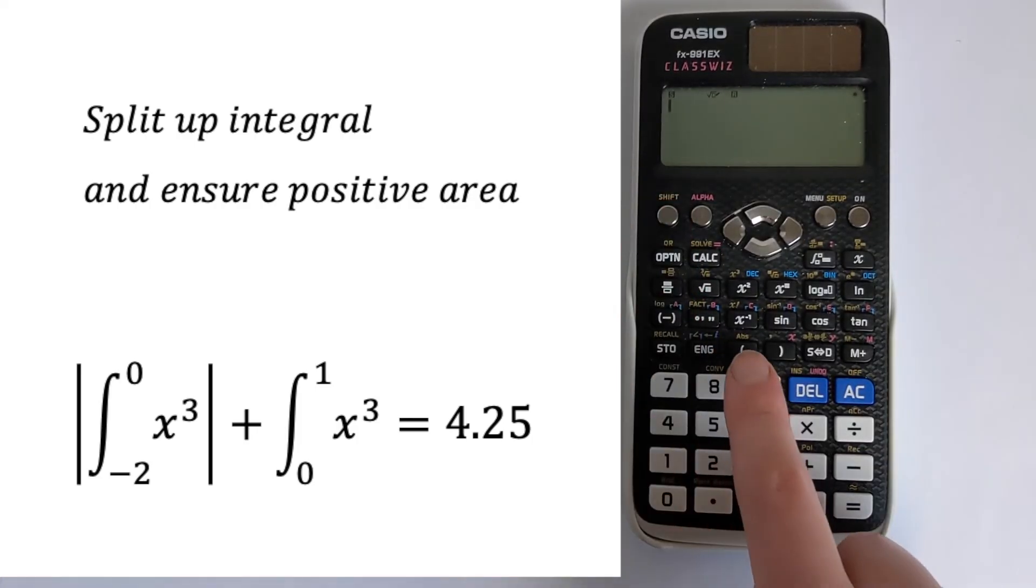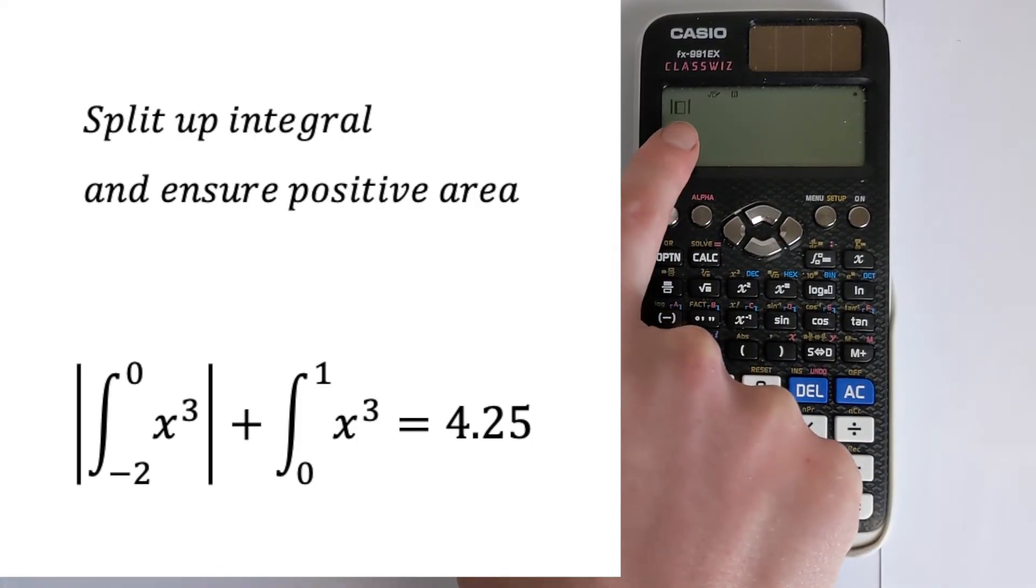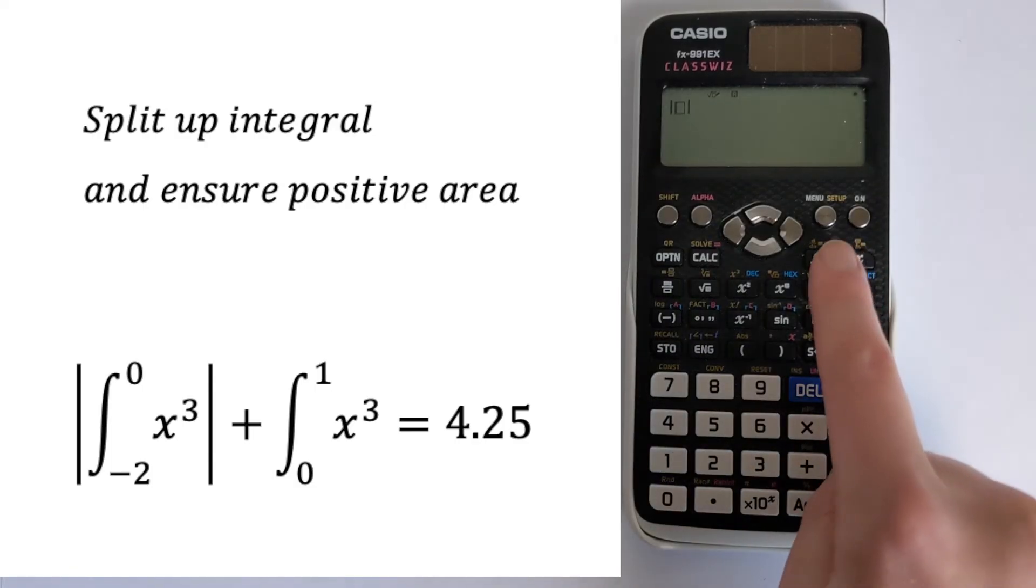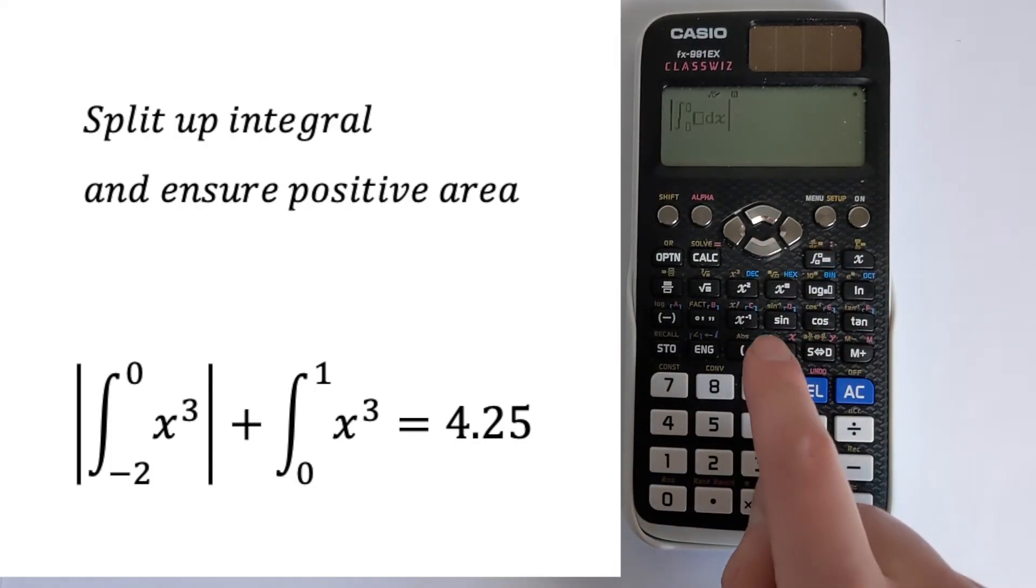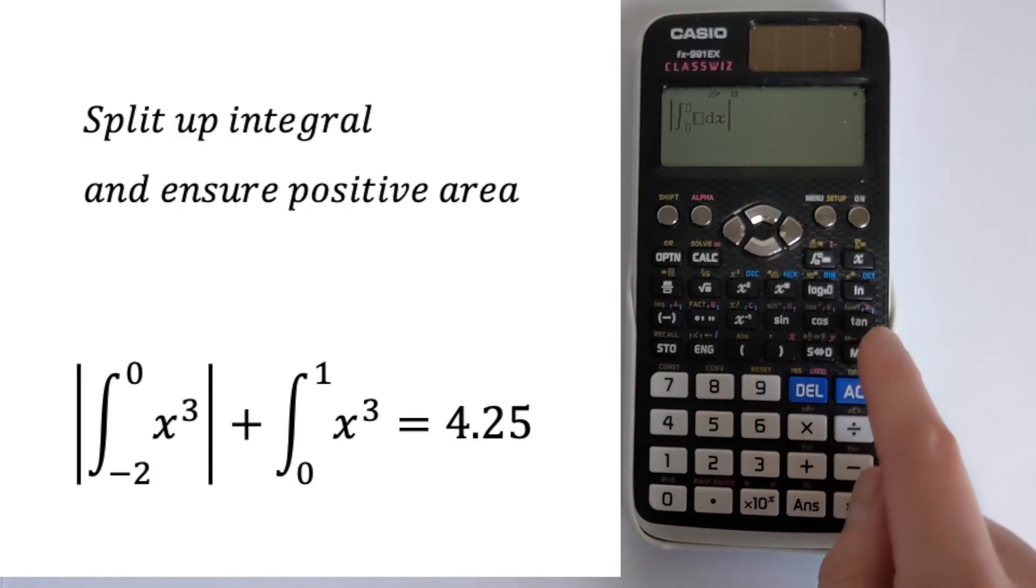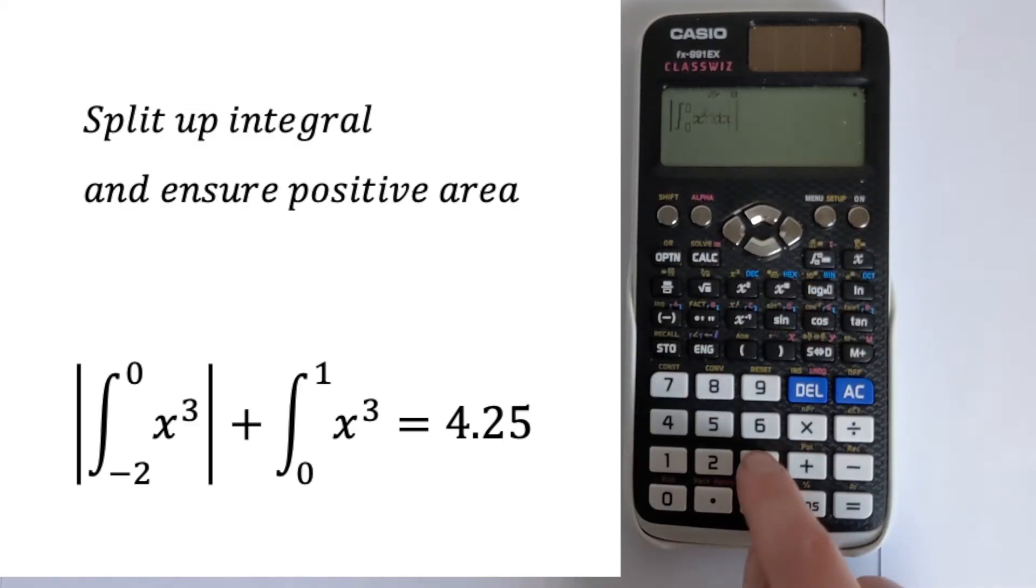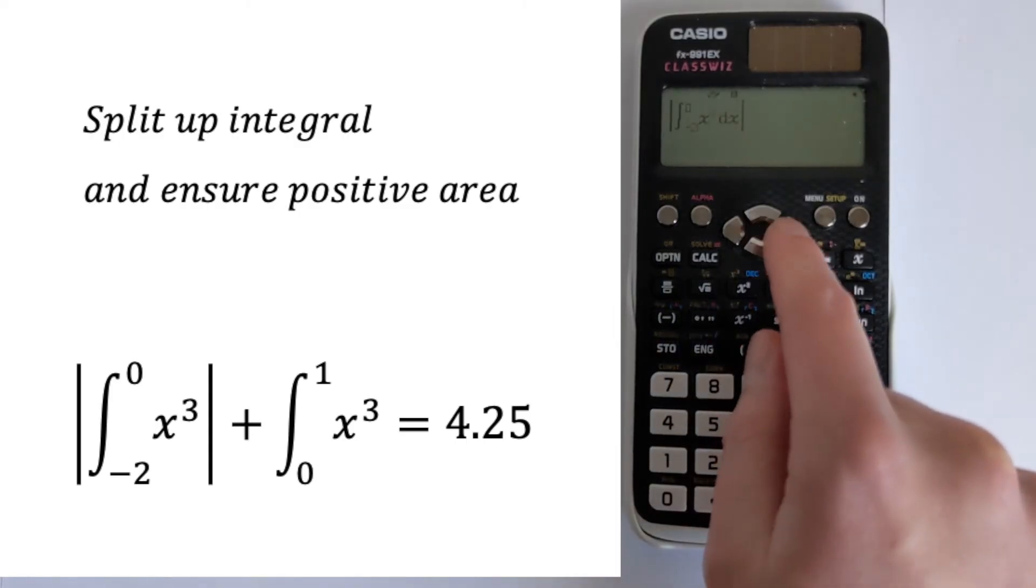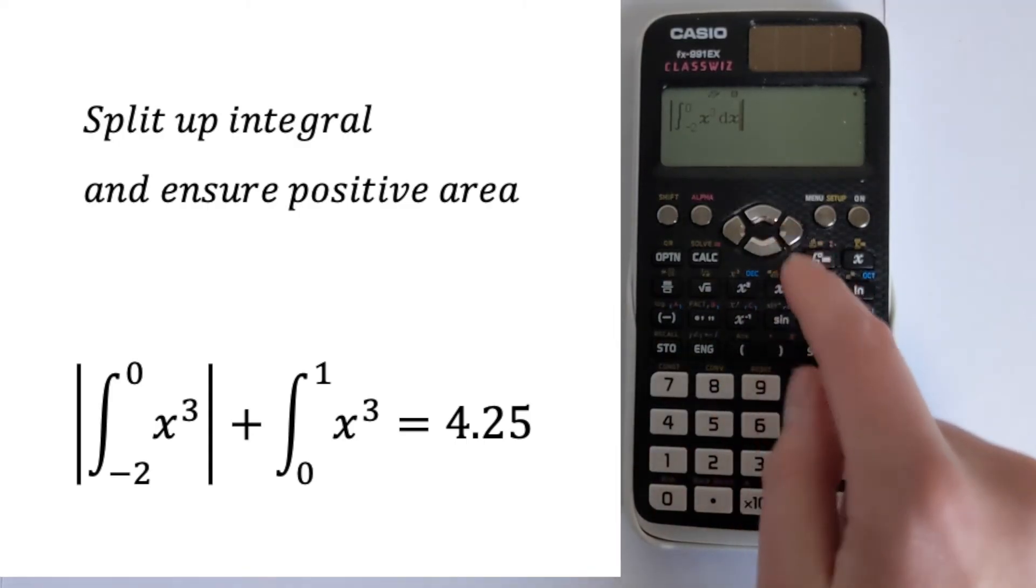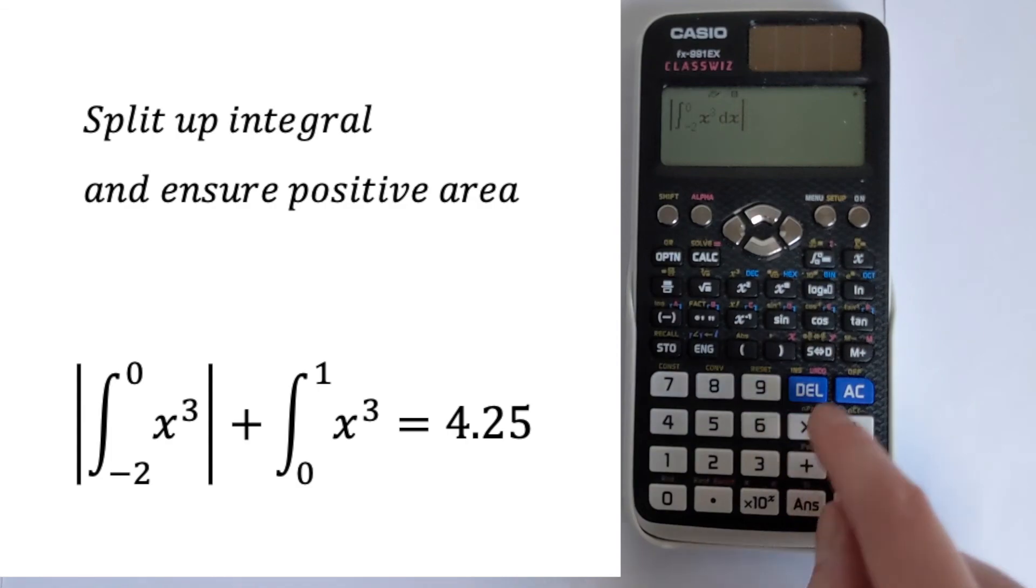So you're going to press shift and then abs. That'll give you the absolute value. Make sure it's positive. Then you want to do the integral. And we're doing the integral of x cubed. And we need to go across. And we're going from minus two to zero. And then we have to keep going. And then plus.